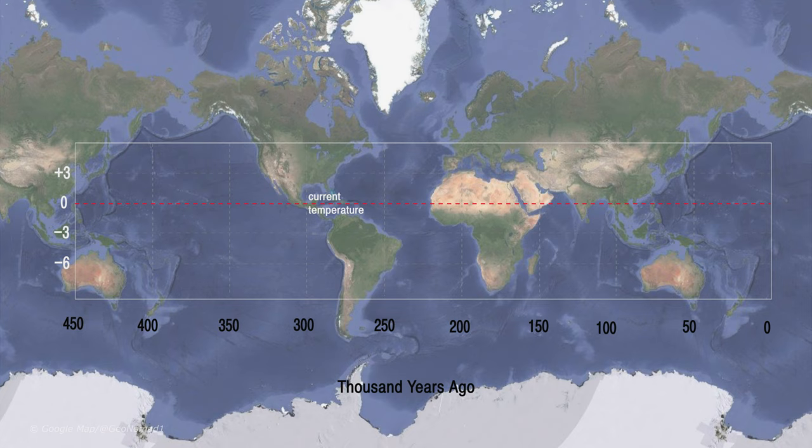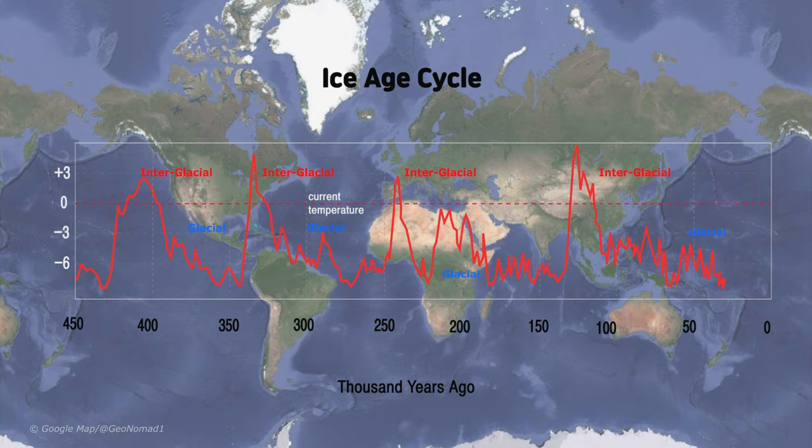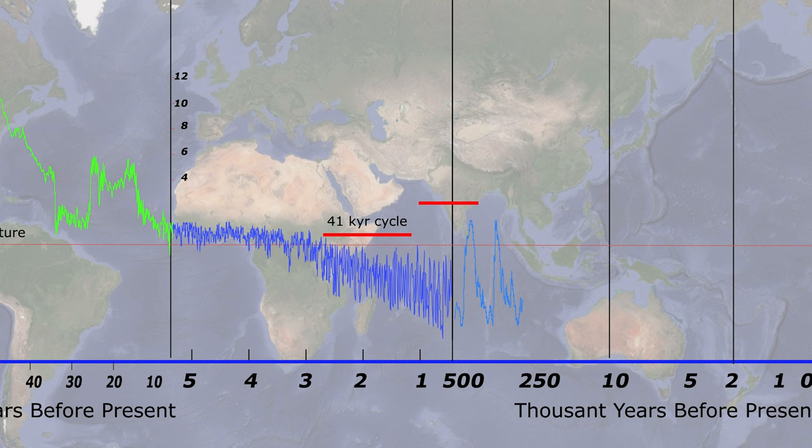The colder episodes are called glacials, and the warmer periods between the ice ages due to the retreat of continental glaciers are called interglacials. The first ice-interglacial cycle was 41,000 years, but after 1 million years, the cycle slowed down to 100,000 years.